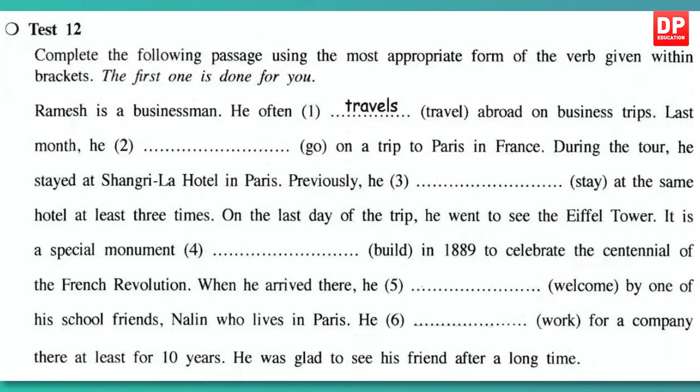Finally, let's look at Test 12. This requires you to figure out what verb form has been used. If you want to refresh your memory on the different verbs and their functions, do look at our previous lessons on the present, past, and future tenses. This too is in the form of a paragraph, and you are requested to complete the passage using the most appropriate form of the verb given within brackets. As usual, the first question is done for you.